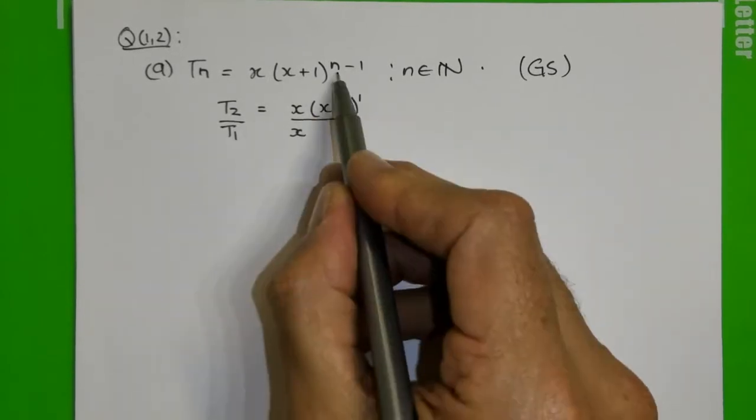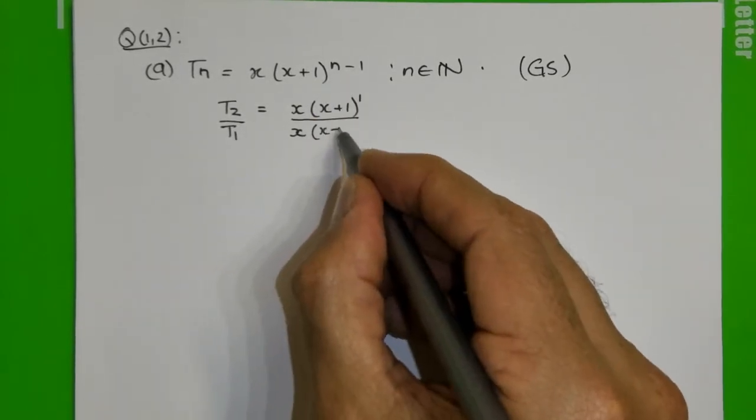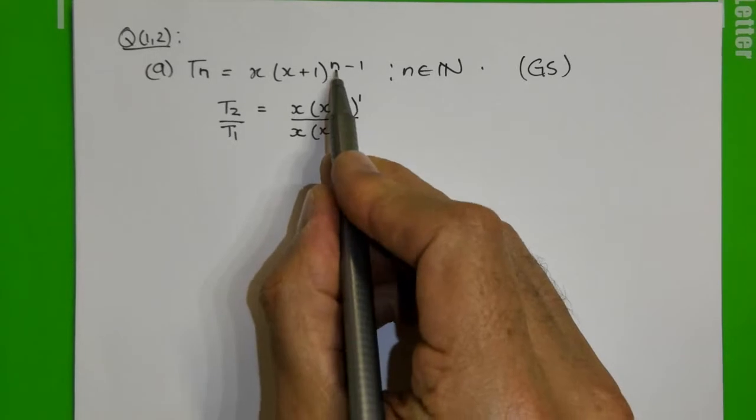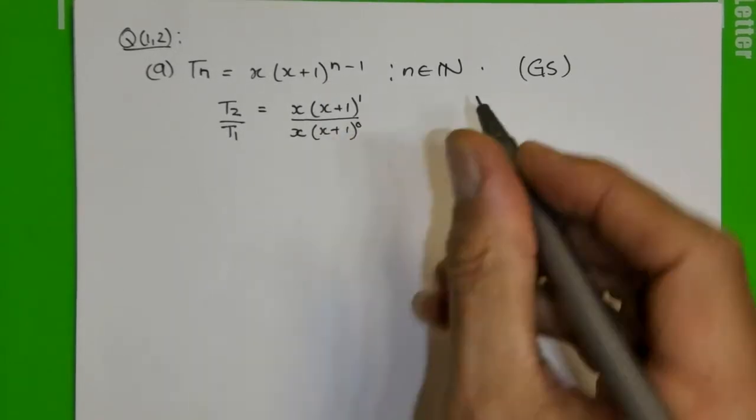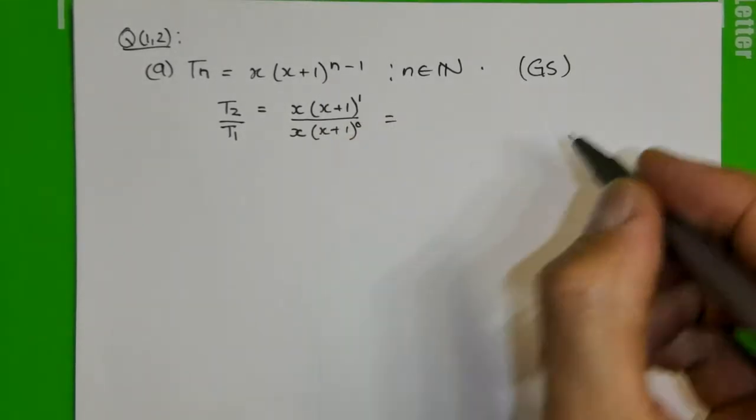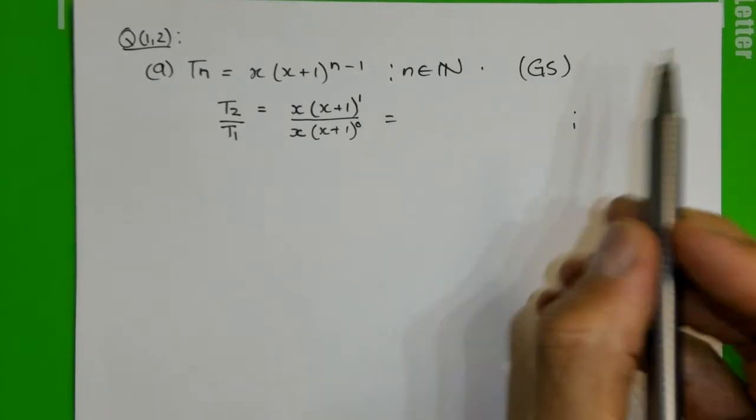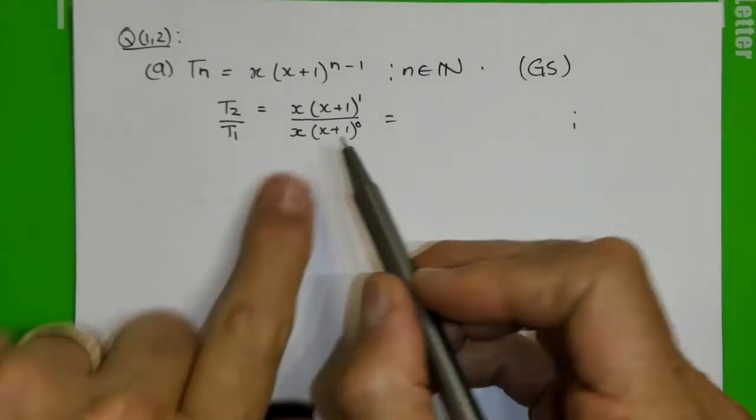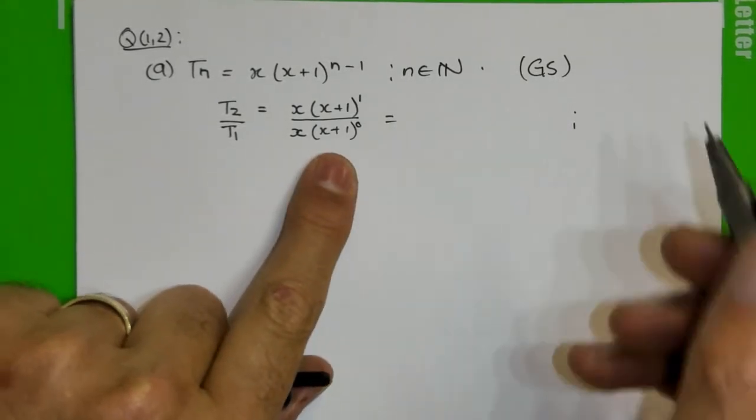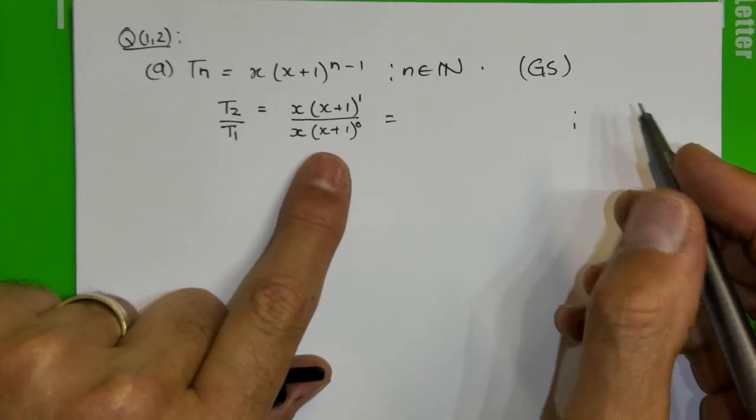So that will happen where n is 1. So x times x plus 1 to the power of 1 minus 1, and that's the power of 0. Now folks, be careful here. We're dividing by x and by x plus 1. None of these can be 0.